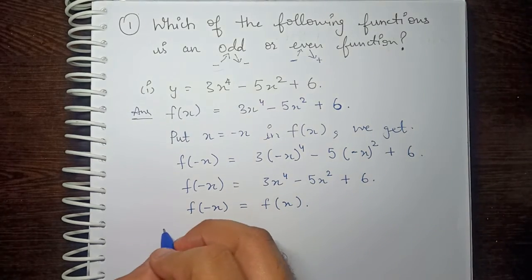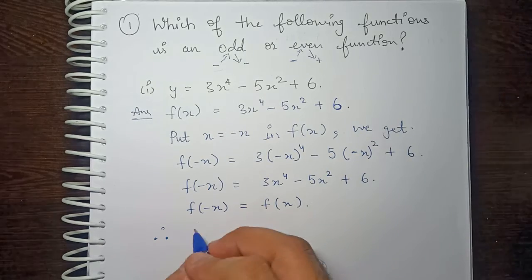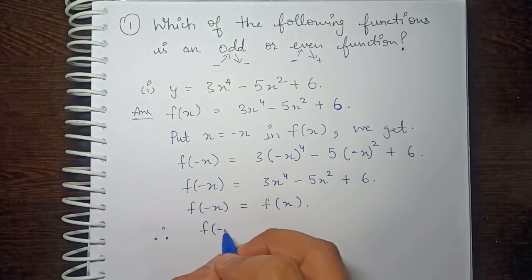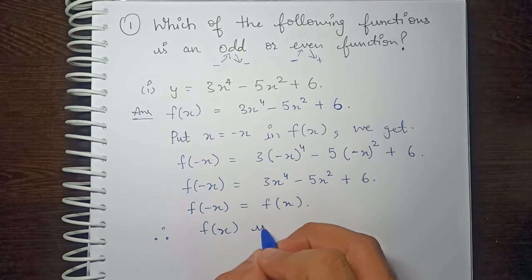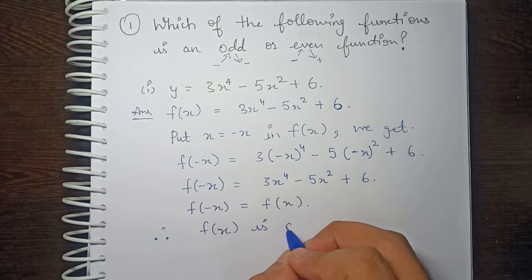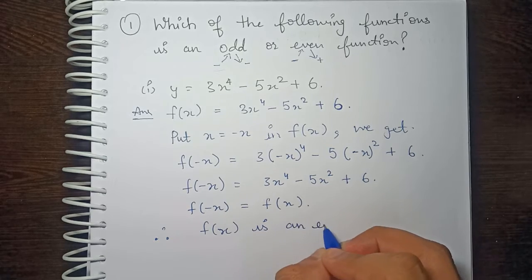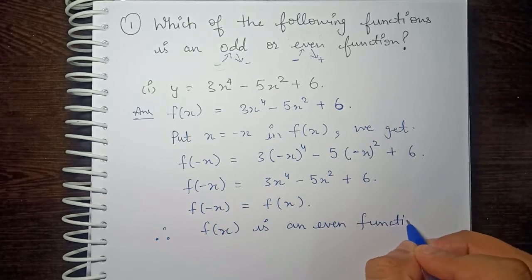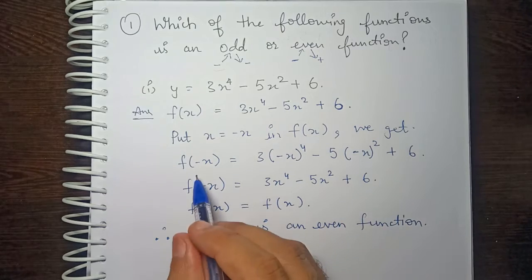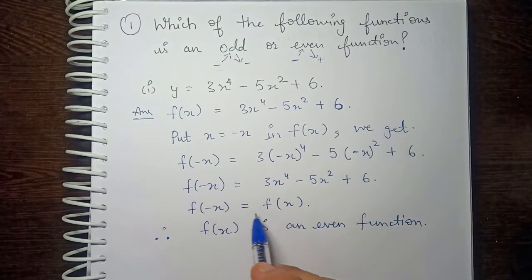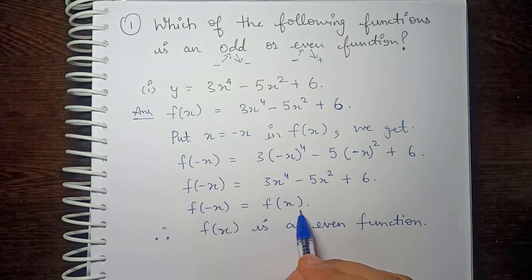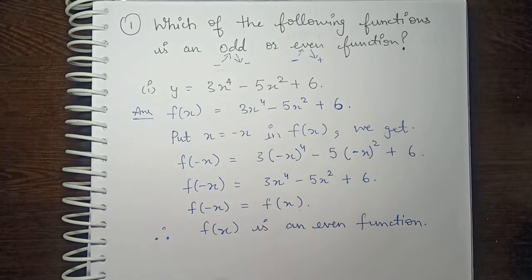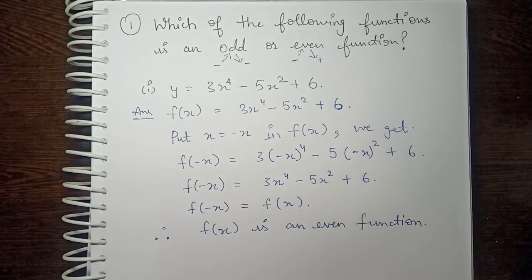Therefore f(-x) = f(x), so f(x) is an even function. It is an even function because even when we put a negative value, we get a positive answer. That is why f(x) is an even function. Now let's look at the second part.